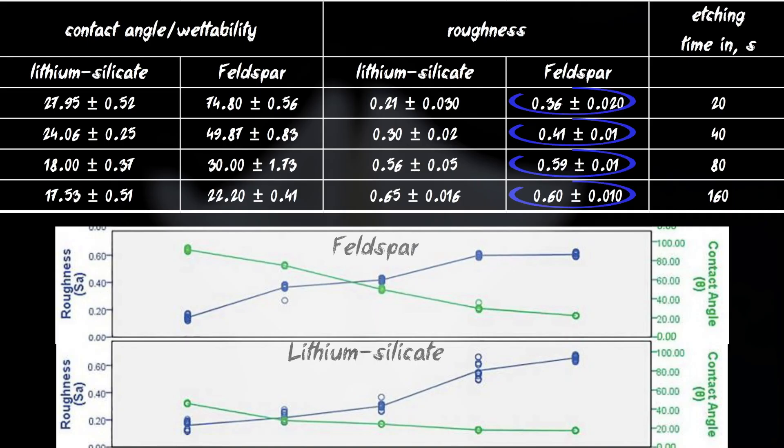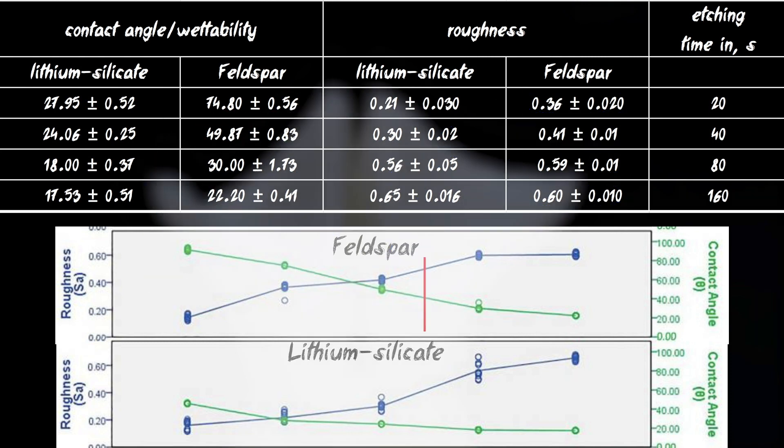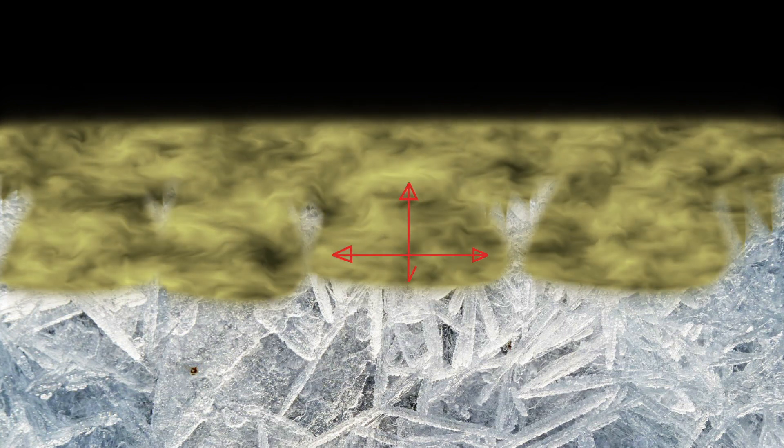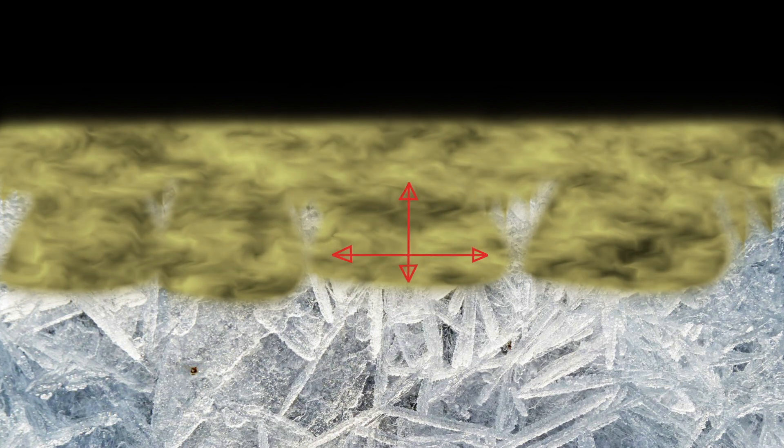For feldspar ceramics, it is recommended to etch 60 seconds, which is also correlated with the roughness graphs and the contact angle. According to one of the hypotheses, the increase in the etching time promotes an increase in the width of the pores, while the depth of the pores does not change significantly. As a result, adhesion deteriorates.